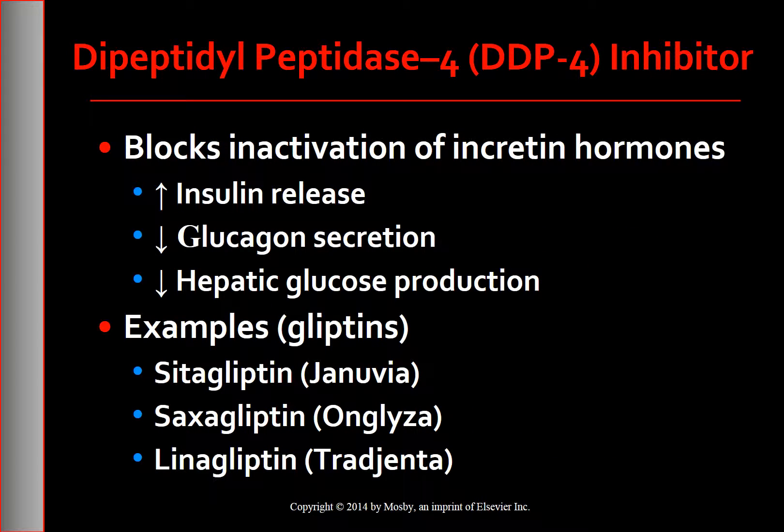The next group is dipeptidylpeptidase-4 (DPP-4) inhibitors. The incretin hormones are released by the intestines throughout the day, but levels increase in response to a meal. When glucose levels are normal or elevated, incretins increase insulin synthesis and release from the pancreas, as well as decrease hepatic glucose production. The incretin hormones are normally inactivated by DPP-4. DPP-4 inhibitors block the action of the DPP-4 enzyme, resulting in an increase in insulin release, a decrease in glucagon secretion, and decreased hepatic glucose production. Because DPP-4 inhibitors are glucose dependent, they lower the potential for hypoglycemia.